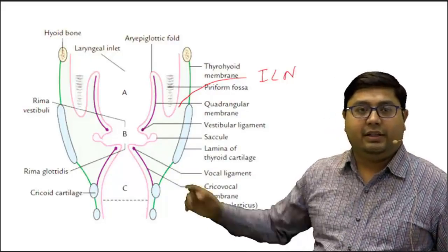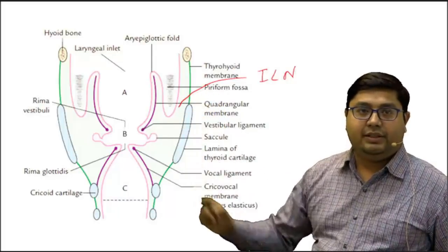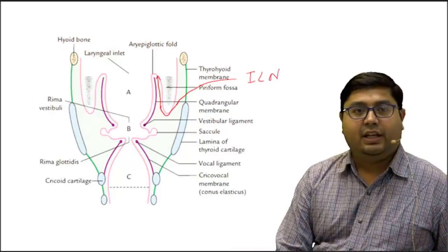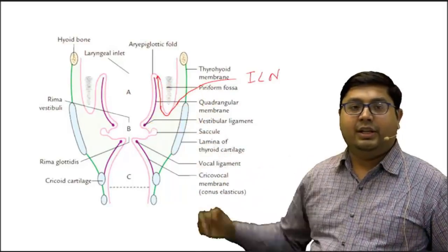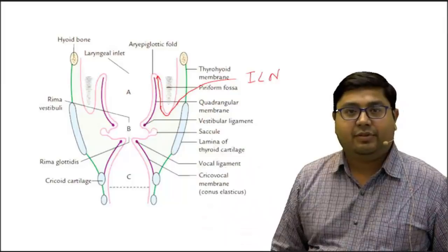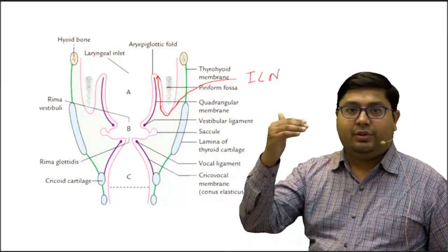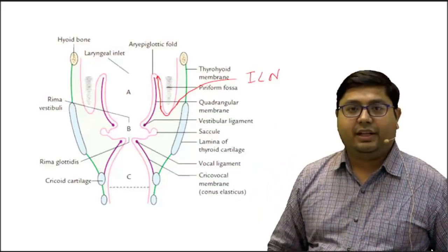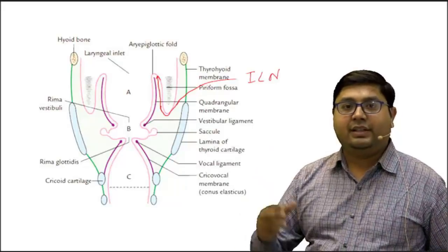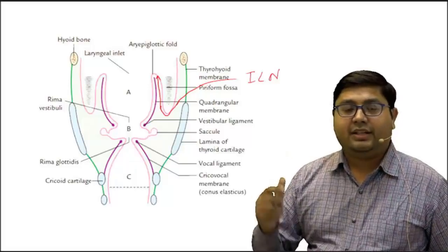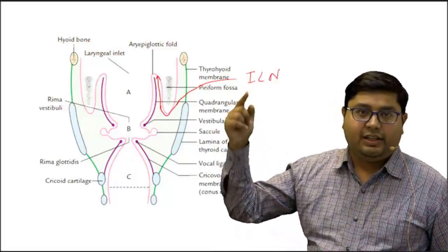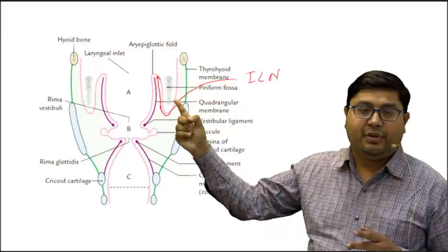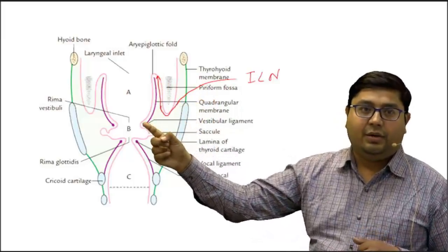The key clinical structure here is the internal laryngeal nerve, which pierces the thyrohyoid membrane and passes along the floor of the piriform sinus, supplying the mucosa above the vocal cord. Regarding laryngeal nerve supply: above the vocal cord, sensory supply is via the internal laryngeal nerve; below the vocal cord it is supplied by the recurrent laryngeal nerve. For motor supply, all laryngeal muscles are supplied by the recurrent laryngeal nerve, except cricothyroid, which is supplied by the external laryngeal nerve.